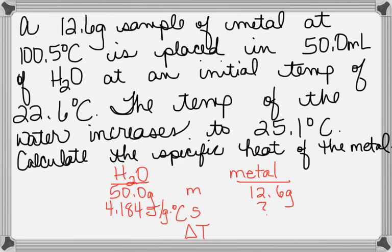Now, what about the delta T? Look at water. Do you know its final temperature and its initial temperature? Okay, tell me specifically what you subtract. 25.1 minus 22.6. Do you see the delta T for the water is 25.1 minus 22.6?